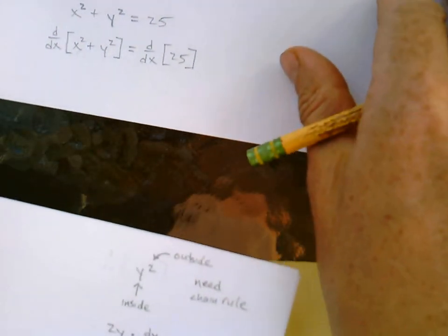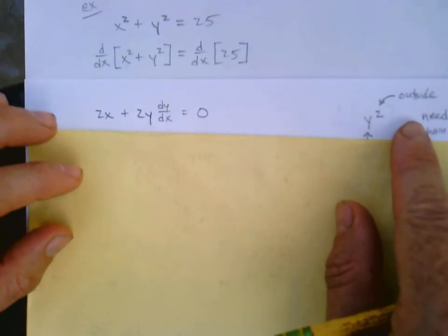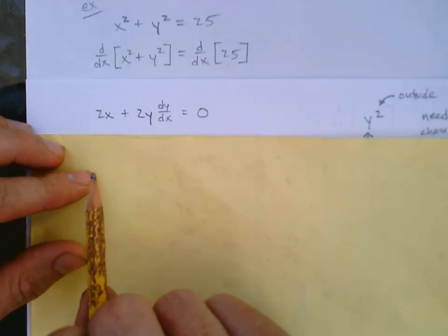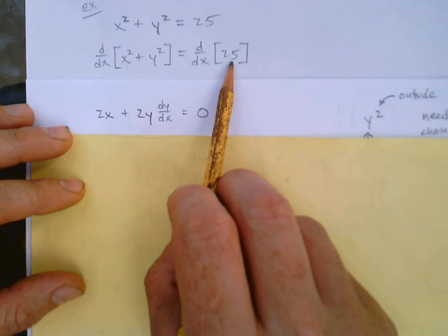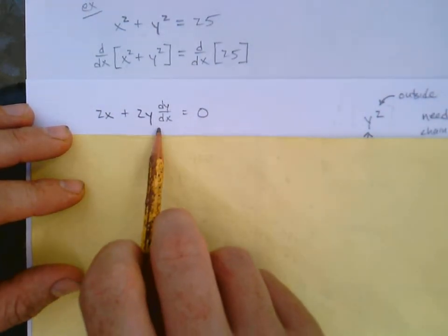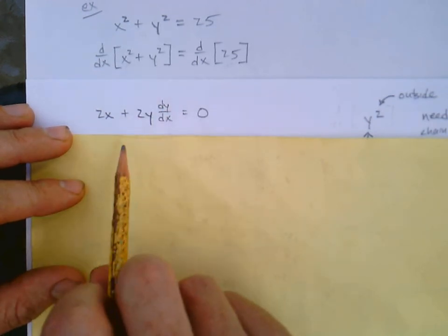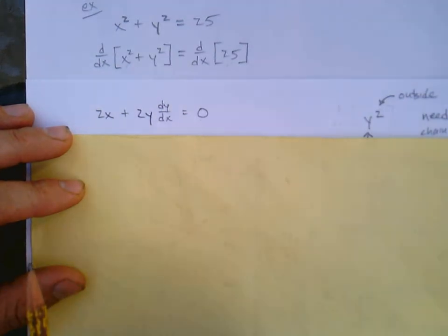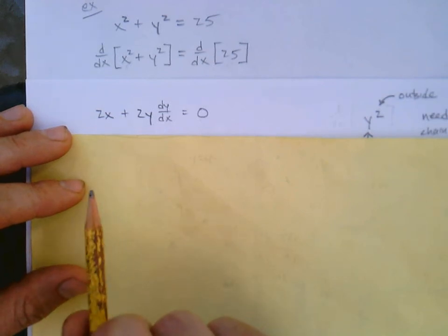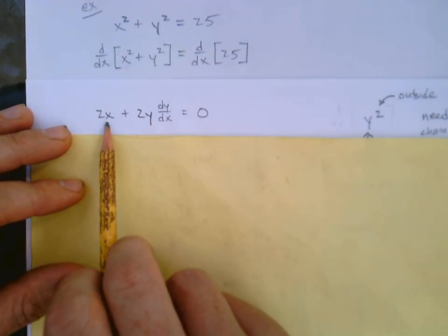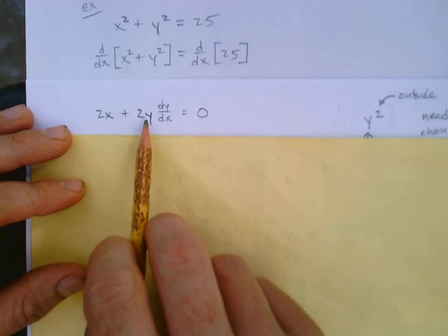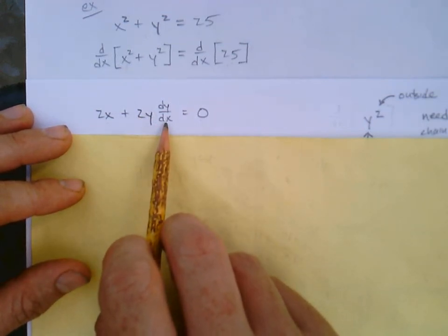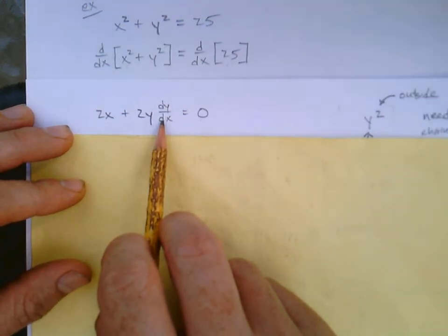So the derivative of both sides gives us: derivative of x squared is 2x, derivative of 25 is zero — that's a constant. The derivative of y squared is 2y times dy/dx. The 2y part probably seems okay, but what's up with that dy/dx multiplied on the end?